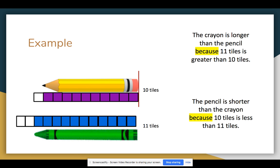So in your seesaw activity today, you're going to have two different objects. You're going to first use non-standard units of measurement to find out the actual measurement of each object. Then you're going to use the magic word 'because' to explain how do you know which object is longer or which object is taller or which object is shorter.